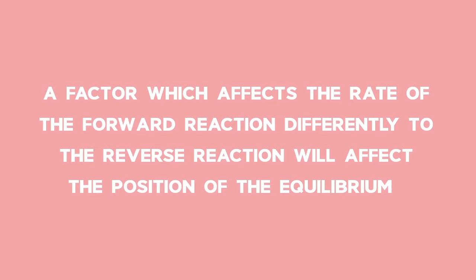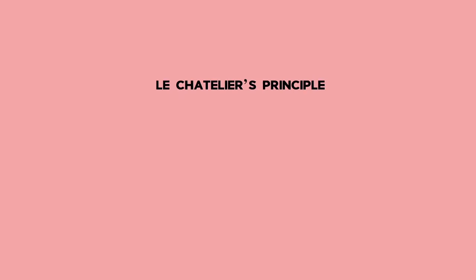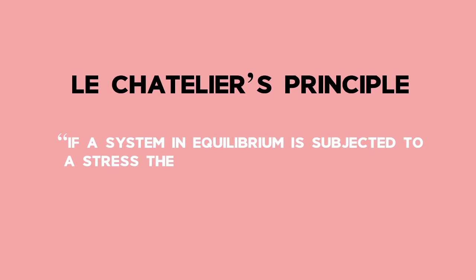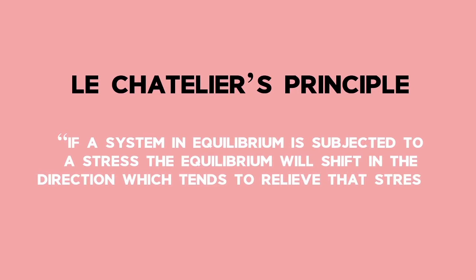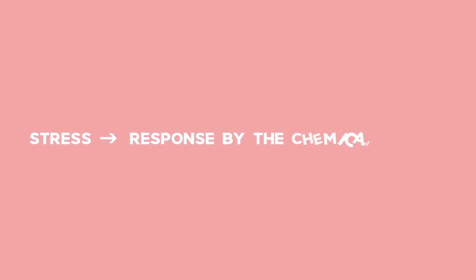First, we look at Le Chatelier's principle. It states that if a system in equilibrium is subjected to a stress, the equilibrium will shift in the direction which tends to relieve that stress. This is a generalization which enables us to predict the way reversible chemical reactions will be affected if a change in conditions is applied at equilibrium.